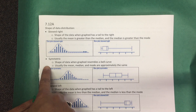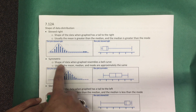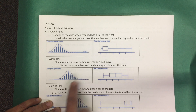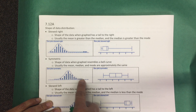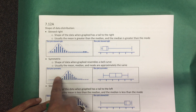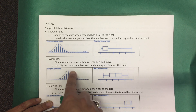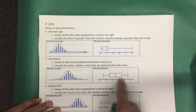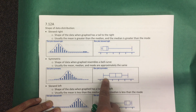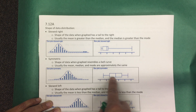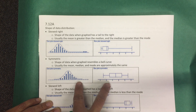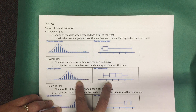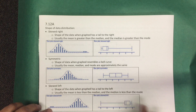When we have data that's symmetric, the shape of the data when graphed resembles a bell curve. Here the data is pretty evenly distributed, and in this box plot you can see the data is also evenly distributed. So this is what we would call symmetric.